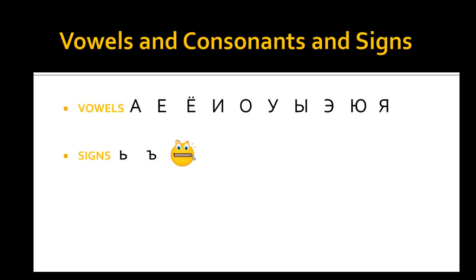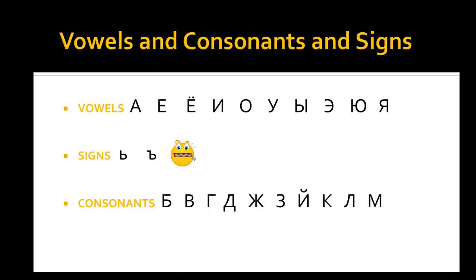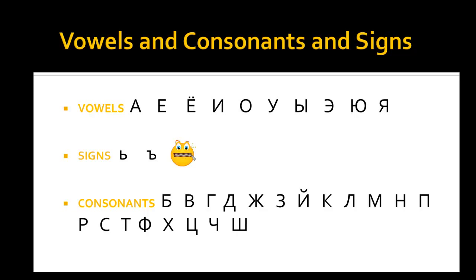Now if you know the vowels and the signs, it will be easy for you to know which letters belong to the consonant group — all those that are left: B, V, G, D, G, Z, K, L, M, N, P, R, S, T, F, H, C, CH, SH, SH.